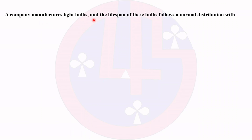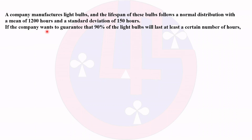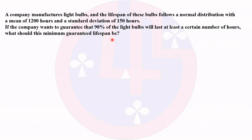A company manufactures light bulbs and the lifespan of these bulbs follows a normal distribution with a mean of 1200 hours and a standard deviation of 150 hours. If the company wants to guarantee that 90% of the bulbs will last at least a certain number of hours, what should this minimum guaranteed lifespan be? We need to find that minimum guaranteed lifespan given the condition that 90% of the light bulbs will last at least a certain number of hours.